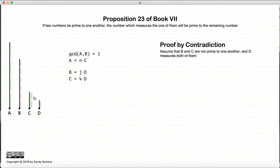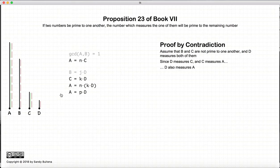So d measures c and it also measures b. Now since c measures a and d measures c, then d also measures a. Since c is measured by d, we can replace this one green line with these two little pink ones. So in other words, d measures a.